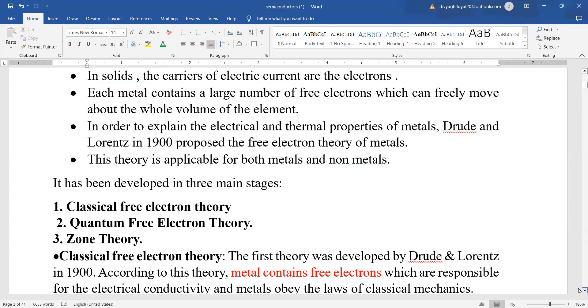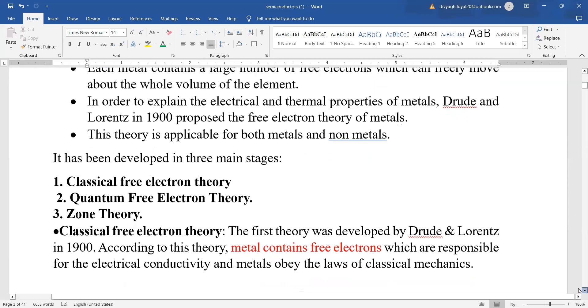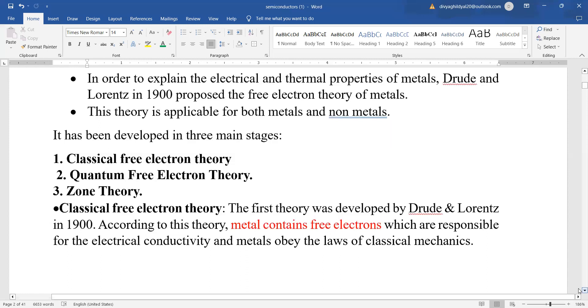In order to explain this theory of how electrical and thermal properties of metals are undergone, many scientists, among them the main ones Drude and Lorentz, proposed the free electron theory of metal.